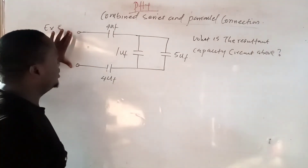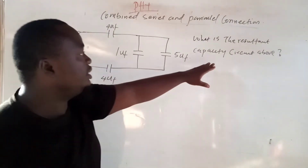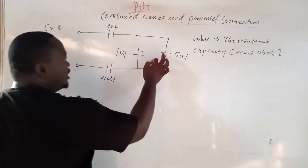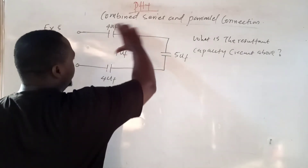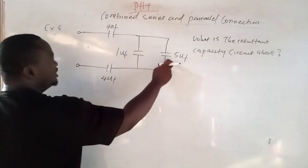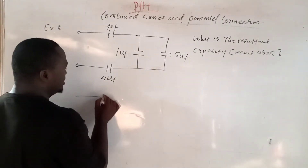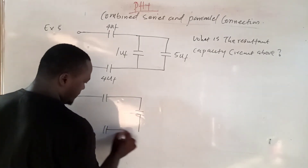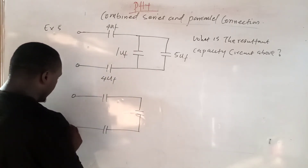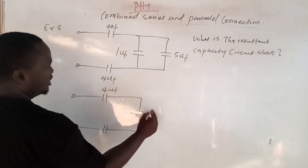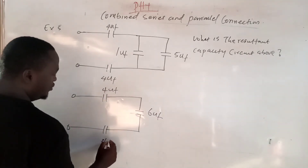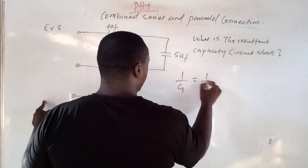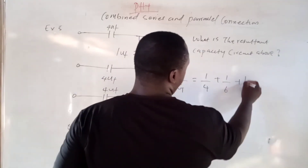Now we want to calculate the total capacitance for this next circuit. Don't be confused — this is in parallel with this. If I resolve the circuit, this plus this is 6 microfarad. So the redrawn circuit will have 4 microfarad, then 6 microfarad, then 4 microfarad — they are all in series. So 1/CT = 1/4 + 1/6 + 1/4.